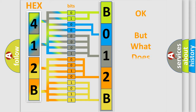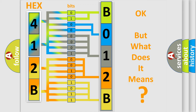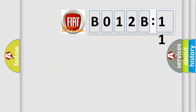We now know in what way the diagnostic tool translates the received information into a more comprehensible format. The number itself does not make sense to us if we cannot assign information about what it actually expresses. So, what does the diagnostic trouble code B012B11 interpret specifically for FIAT car manufacturers?